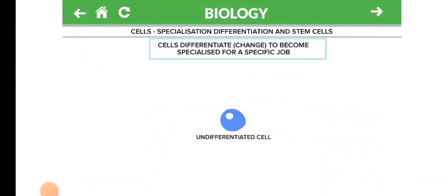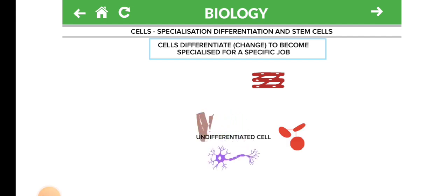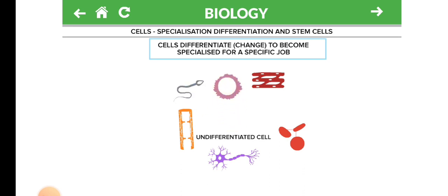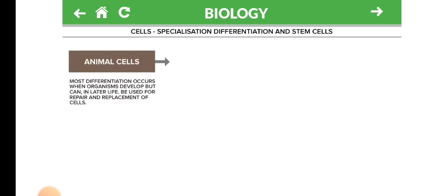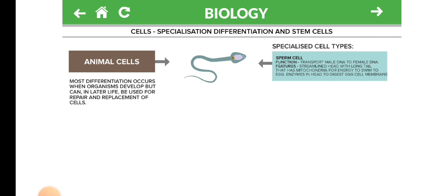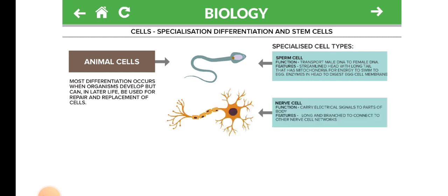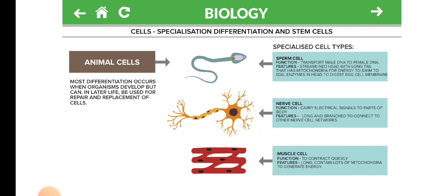Biology. Cells. Specialization. Differentiation and Extreme Sales. Differentiation means change to become specialized for a specific job. Like someone here showed this picture to understand what differentiation and undifferentiation is. Most differentiation occurs when organisms develop, but can later in life be used for repair and replacement of cells.